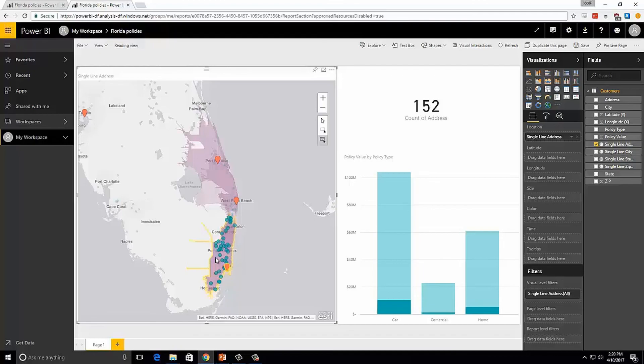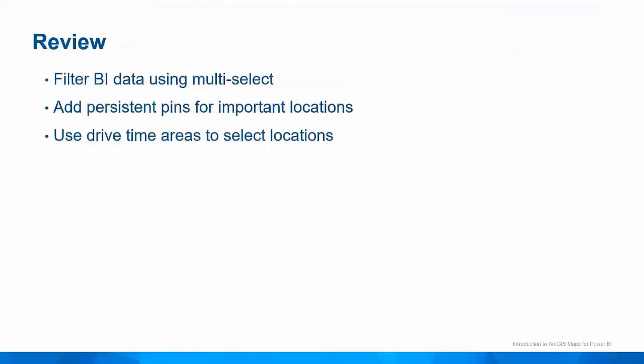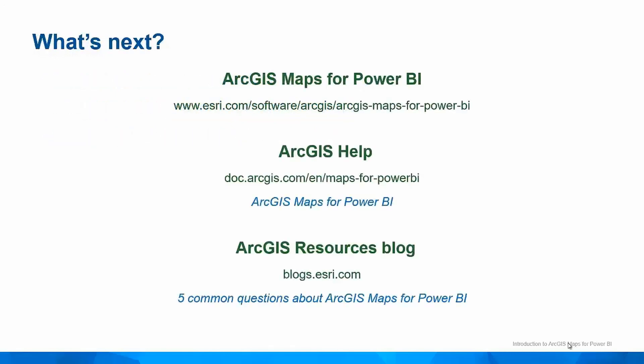So let's recap. We just learned how to use the multi-select tool to filter your BI data. We learned how to add persistent pins for your important locations. We also learned how to use drive time areas to make selections on your report. To learn more, check out the product page and the documentation site to get the very latest information about ArcGIS Maps for Power BI. On behalf of everyone at Esri, I'd like to thank you for watching.